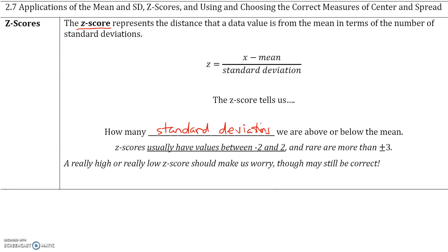The formula for a z-score is x minus the mean divided by the standard deviation. Z-scores usually have values between negative 2 and 2, and are rare when the values are more than positive or negative 3.